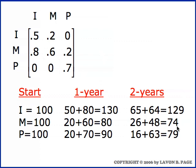Twenty percent of the one hundred and thirty immatures — which is twenty-six — come from the immature category into the mature category during the second year. And of the eighty matures, sixty percent of them, which is forty-eight, survive. So twenty-six plus forty-eight is seventy-four matures at the end of year two.